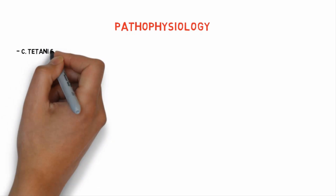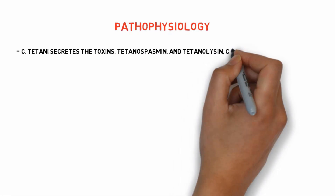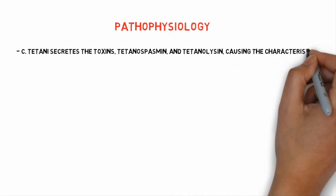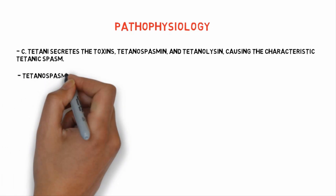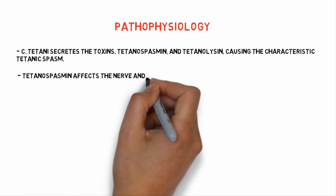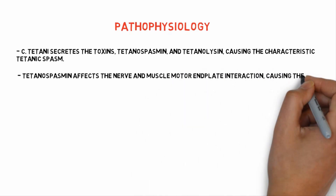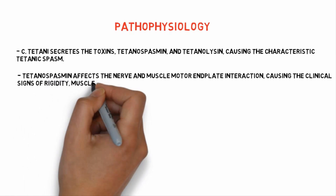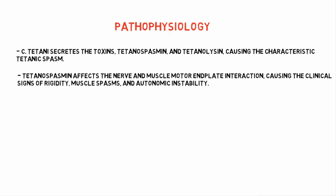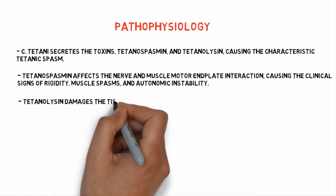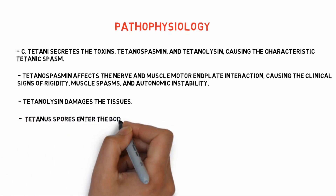Coming to the pathophysiology of Tetanus, Clostridium tetani secretes toxins. Tetanospasmin affects the nerve and muscle motor interaction, causing the clinical signs of rigidity, muscle spasms, and autonomic instability.